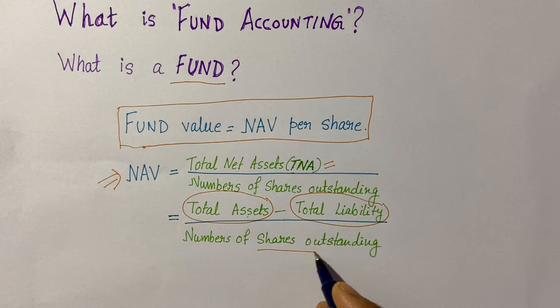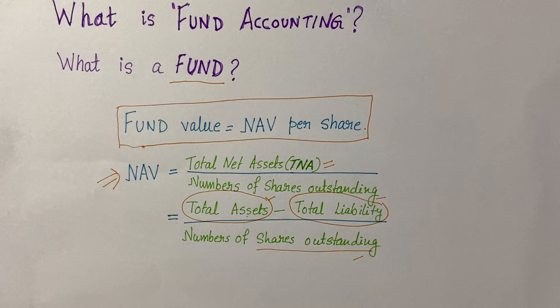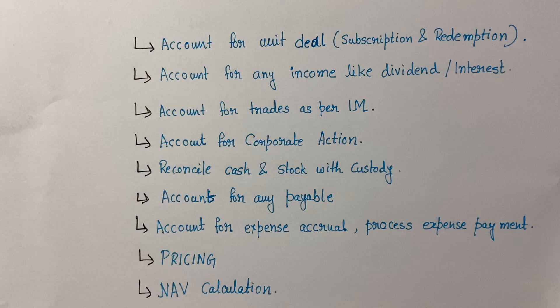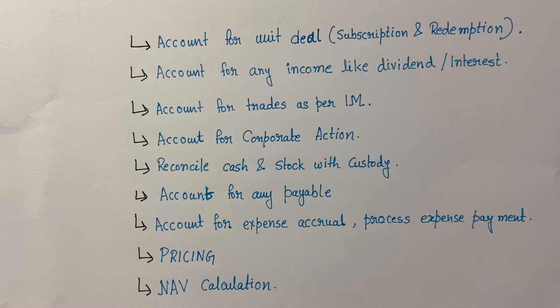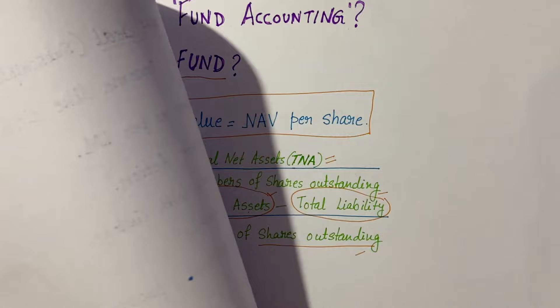When you are valuing your fund, you need to evaluate each of these points. A fund accountant will go through several steps to evaluate the NAV. First, a fund accountant needs to check for unit deals, commonly known as subscriptions and redemptions into the fund, which will determine the number of shares outstanding.